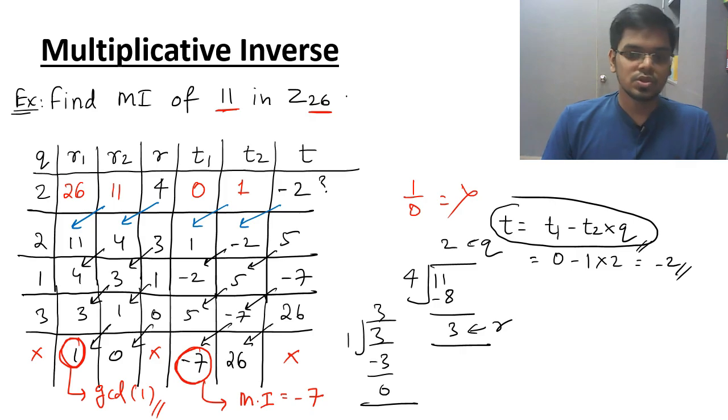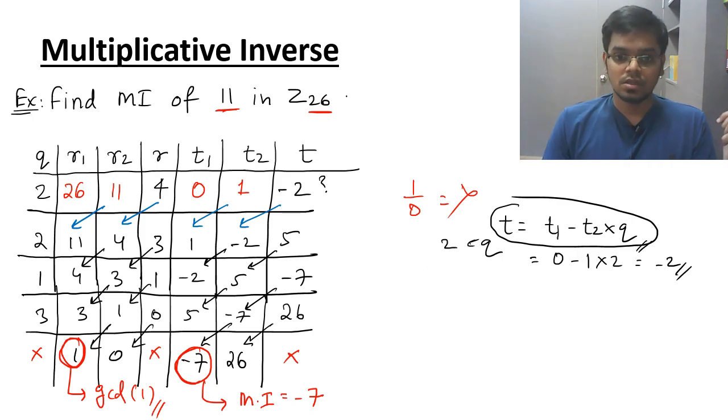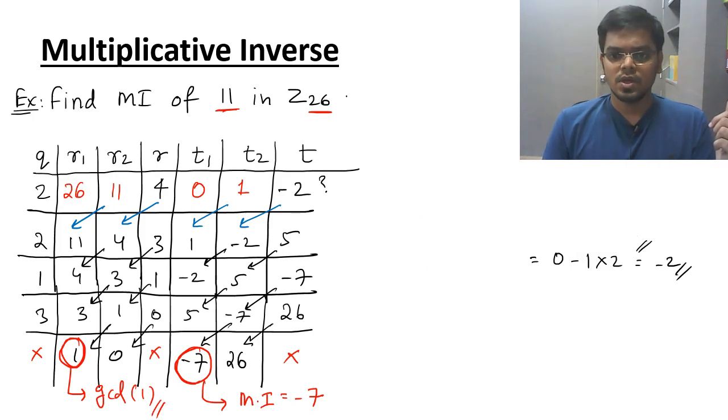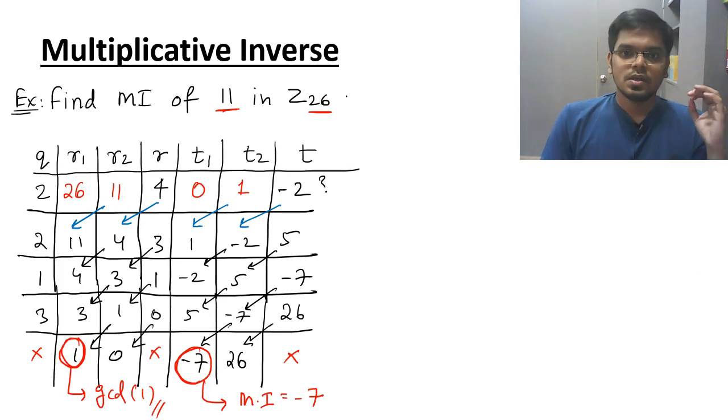Now most of the students may ask, Sir, the answer is negative. What if the examiner asks the answer in positive form? Then what to do? Yes, you can write the answer in positive form as well. Let me rub this part and I will show you. So if you need positive multiplicative inverse, then what you have to do is you have to see your domain. The domain is 26. Then you have to add this value here. So plus minus 7, the answer is 19.